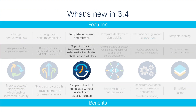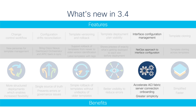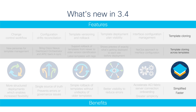With template versioning and rollback features, you can easily rollback templates from newer to older versions with no need to undeploy older templates. Template deployment plan visibility shows you a preview of exactly what's getting deployed to each site before deployment for fewer errors. Version 3.4 also supports a NetOps approach to interface configuration management — a beta feature enabling faster ACI Fabric Server connection onboarding. Version 3.4 also lets you perform template cloning across tenants to make operations faster and simpler than ever.